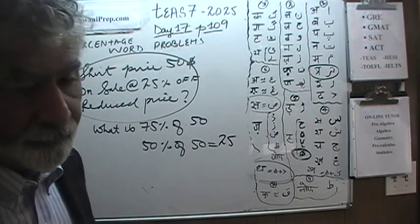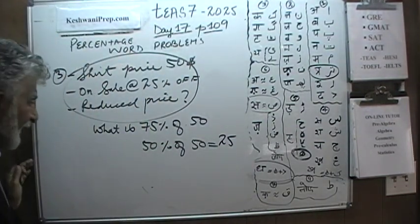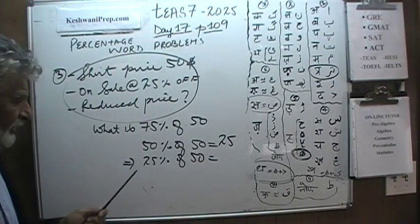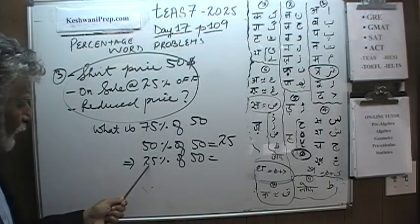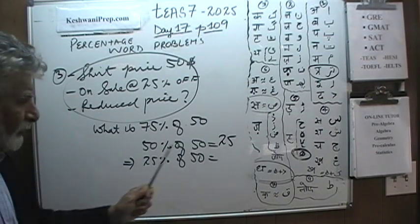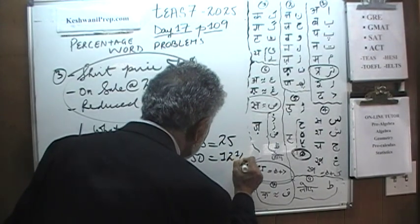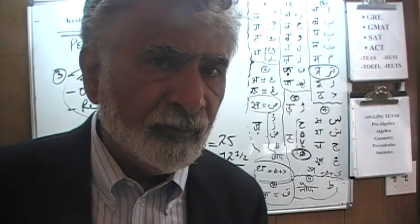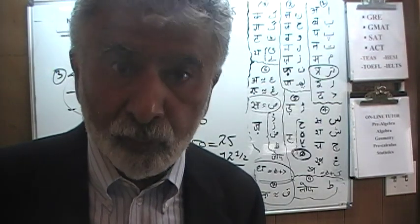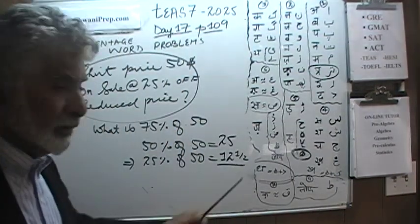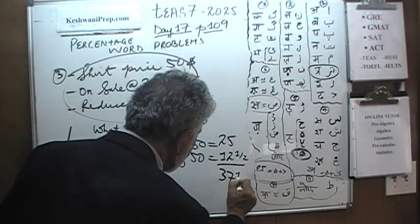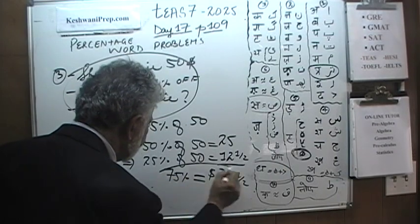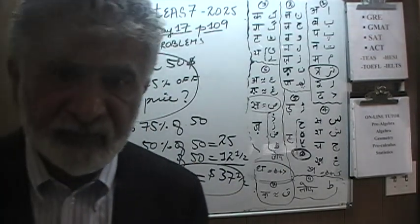Logic dictates that if 50% of something is 25, then 25% must be half of 25. Half of 25 is 12 and a half. Break up 25 into 24 and 1. Half of 24 is 12, and half of 1 would be half. There we go, we have our answer. We are going to pay $37.50, because that represents 75% of the price.